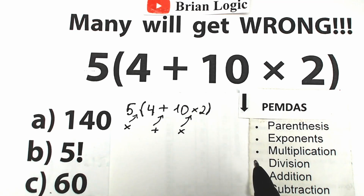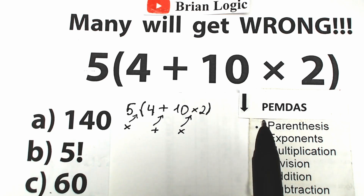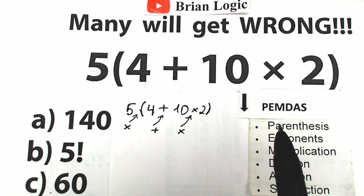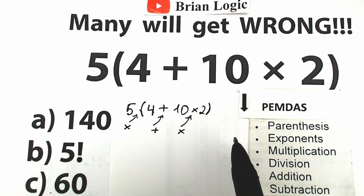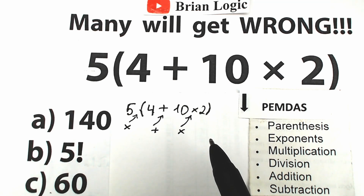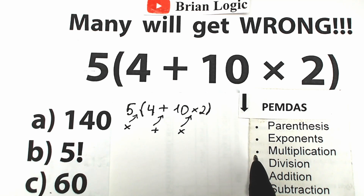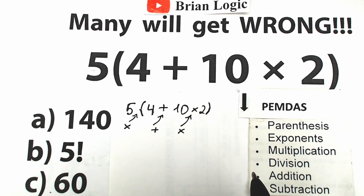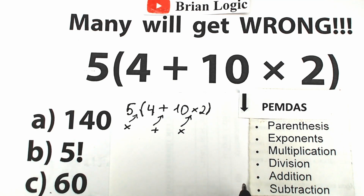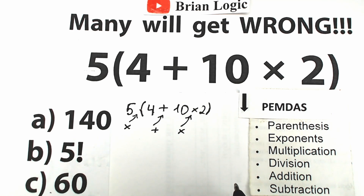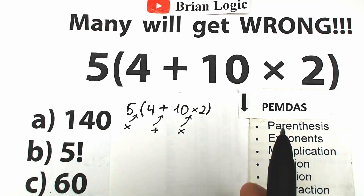Let's look at how PEMDAS works. PEMDAS works from the top to the bottom. First we should evaluate the expression inside parentheses. Next we should evaluate exponents — for example, 2 cubed or 2 to the fifth power. Next we need to evaluate the multiplication and division group, finding all multiplication and division signs. The last step is addition and subtraction. So parentheses has the highest priority, and addition/subtraction has the lowest priority.